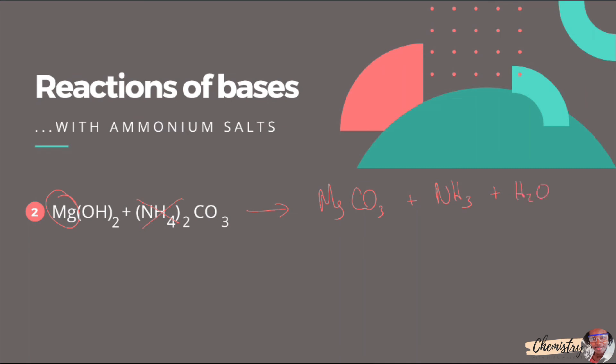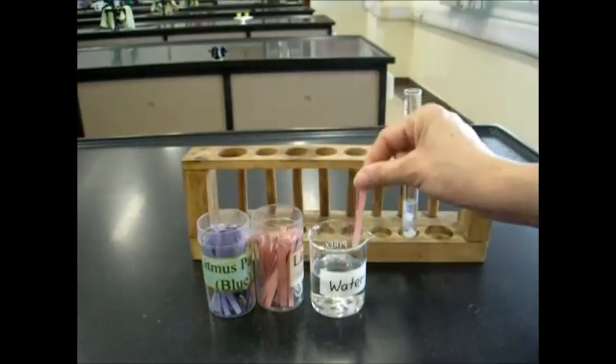Before you go, ammonia is a gas and we can test for the presence of this gas by using a damp red litmus paper. Remember, ammonia is a base and bases turn red litmus paper blue. So if you hold a damp red litmus paper in the mouth of a conical flask or test tube wherever the reaction is taking place, if ammonia gas is produced, the paper will change its color from red to blue.